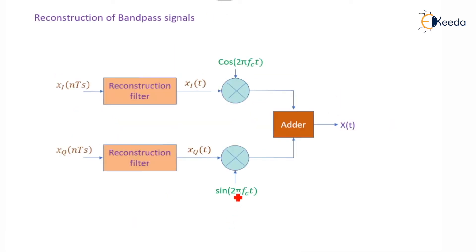Now the reconstruction of this signal: how we can recover back our original information signal with the help of this bandpass signal. Xi(nTs) and Xq(nTs) are both coupled to reconstruction filters, which act like low-pass filters.